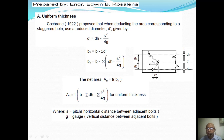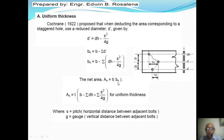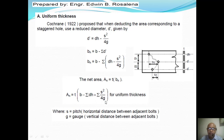Between bolt one and bolt two, we have horizontal distance s1 and vertical distance g1, giving a deduction of dh − s1²/4g1. Between bolt two and bolt three we have s2 and g2. The net area equals thickness t times net width, so: An = t × [b − Σdh + Σ(s²/4g)], where removing the parenthesis gives minus the summation of dh plus the summation of s²/4g.